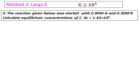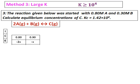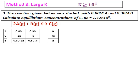Let's do method 3, the large K method. In this case, K is much larger than 10 to the power of 4. The reaction given was started with 0.80 molar A and 0.30 molar B. Calculate the equilibrium concentrations of C. Kc is 1.42 times 10 to the power of 8 — a very large value — meaning the reaction proceeds mostly toward products and we will hardly have any reactant left. The reaction is 2A plus B giving C. Set up the ICE table, then find the limiting reagent, which is B.